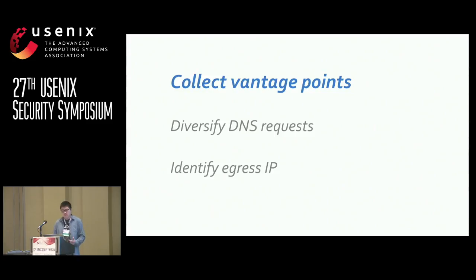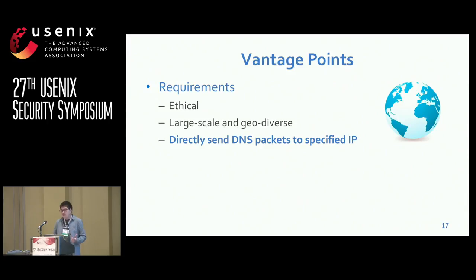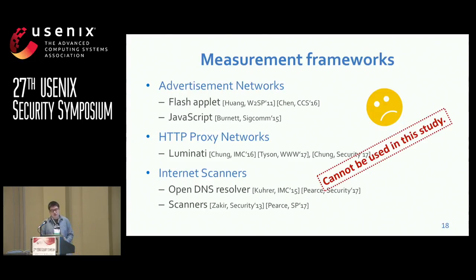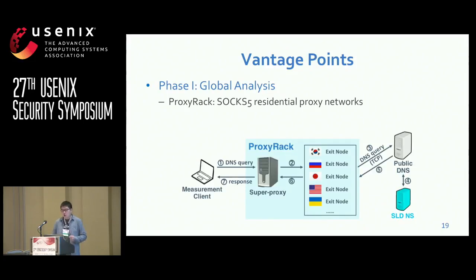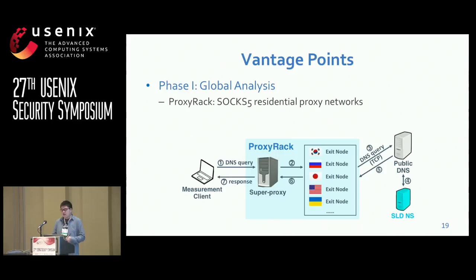The first challenge: how to collect vantage points. In this study, we need global vantage points — they have to be ethically acquired, large-scale, and diverse. Most importantly, they should allow us to send DNS requests to any IP address we want, like Google DNS. In prior studies, different DNS measurement platforms were developed, but they cannot be directly used in our study. For example, JavaScript Advertisement Network and the Luminati Proxy Network only allow sending DNS requests to fixed local resolvers. To address this challenge, we designed two phases of measurement. The first phase is called global analysis, where we use the Proxy Rack to collect vantage points. Proxy Rack is a VPN-based residential proxy network that allows us to send DNS requests to any IP addresses. Currently, almost all DNS traffic is over UDP, but this network only accepts TCP traffic, so this phase can only describe a big picture of the hidden DNS interception problem.